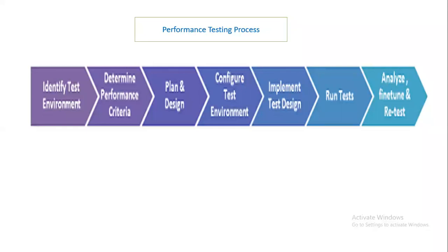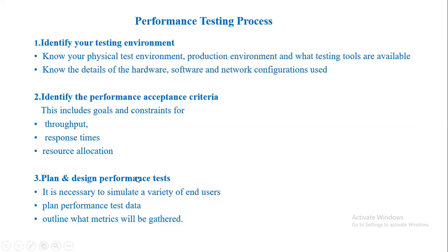The first step is to identify the test environment — we need to know where we are going to test. We can't test on a live system; we need to test on a physical test environment first, and only then move to production. Otherwise, the actual functionality of the website will be disturbed. So we have to identify whether we are testing in a physical test environment, a production environment, or using testing tools.